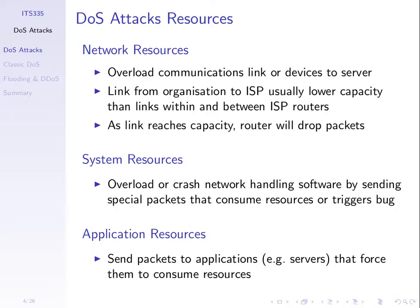We'll look at some examples. Which links do we want to attack or overload? Usually the link from an organization to the ISP is the lowest capacity in the path.